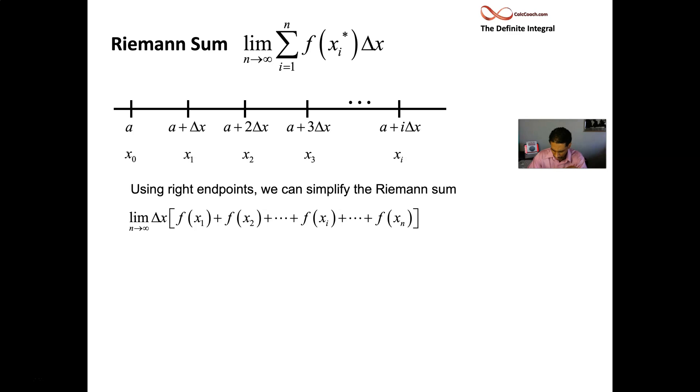Each of those heights are multiplied by delta x, but instead of putting delta x on each one, we can factor it out. This will be our limit. The xi star in the definition is now xi when doing right endpoint. So xi is what's plugged into our function f. For us, xi is a plus i delta x.